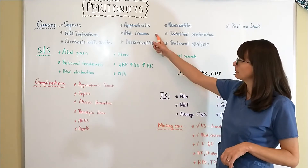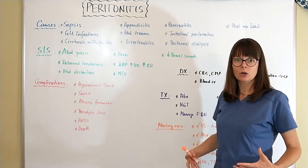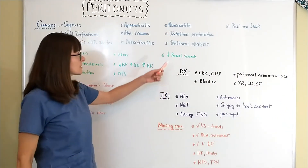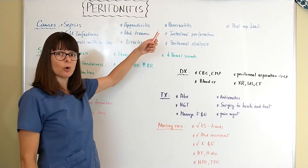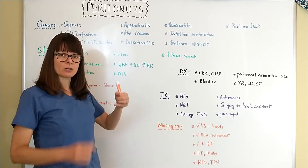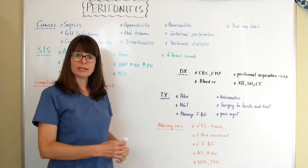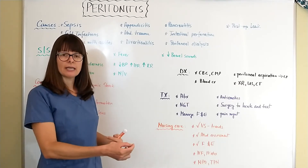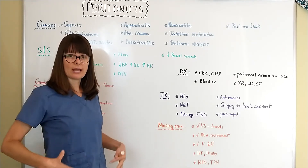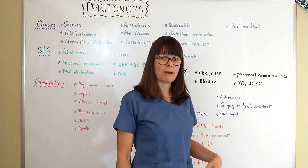Abdominal trauma is another cause — for example, if there is a car accident and the patient's bladder ruptures, urine leaks all over the peritoneum causing inflammation and peritonitis. Additional risk factors include intestinal perforation from a small bowel obstruction, inflammatory bowel disorders like Crohn's disease or ulcerative colitis causing toxic megacolon, peritoneal dialysis where infected fluid or a compromised dialysis catheter can cause inflammation, and post-operative leaks from any abdominal surgery.